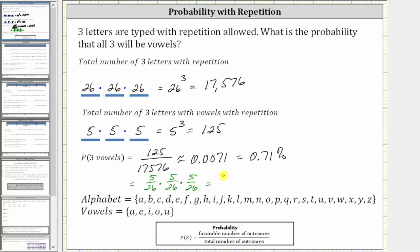Notice multiplying we do get five cubed divided by 26 cubed, which gives us the same fraction of 125 divided by 17,576, which we know as a decimal is approximately 0.0071, which is 0.71%.